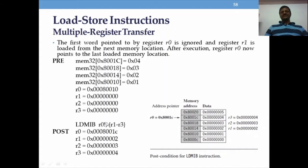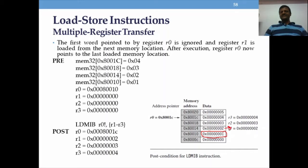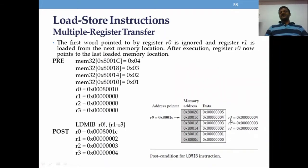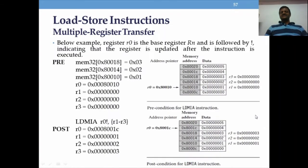The same logic applies to increment before (LDMIB). With increment before, first the pointer is incremented and then the data is copied — so the first register r1 does not get the value at the original address. You can observe that in the previous example r1 got 1, but with increment before, r1 gets 2, r2 gets 3, r3 gets 4. That is the only difference between LDMIA and LDMIB.